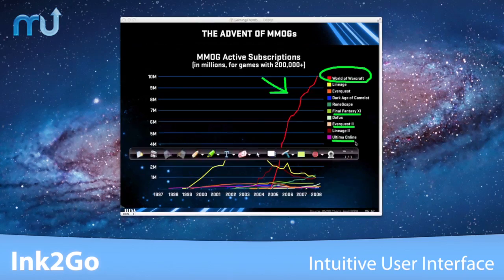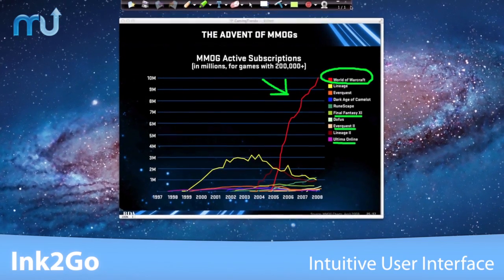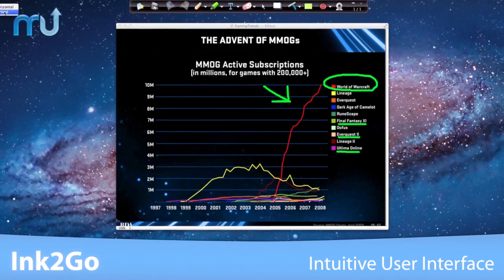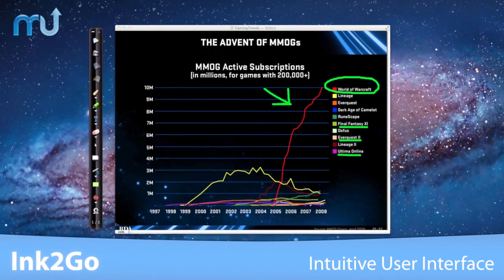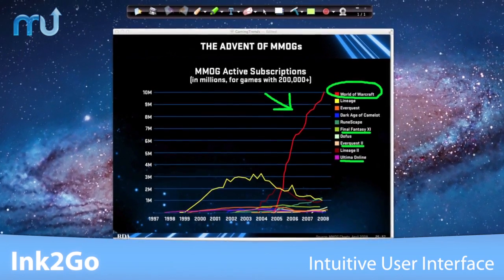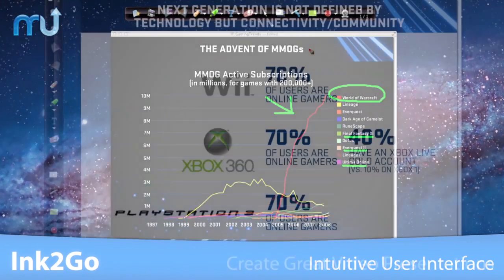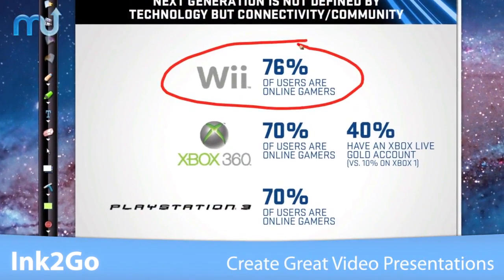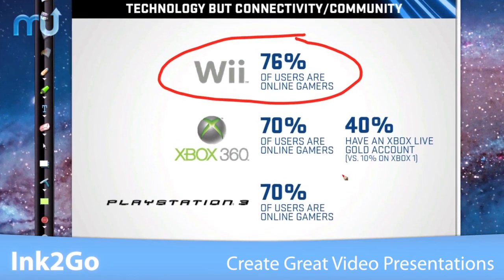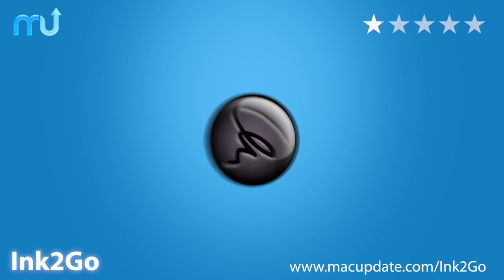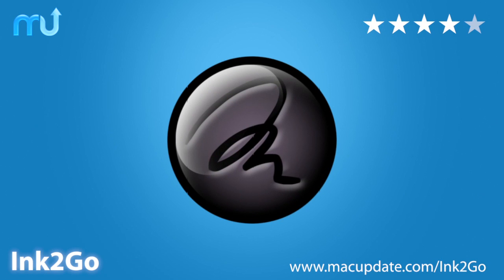Ink2Go features an easy and intuitive user interface. The floating toolbar can be moved around and switched between horizontal and vertical, so it never gets in the way of your presentation. Create great presentations and record them easily on your Mac with Ink2Go. Download it today at macupdate.com/ink2go.